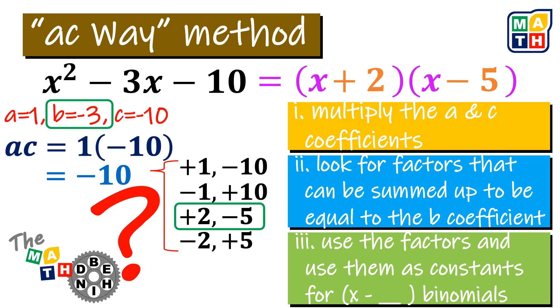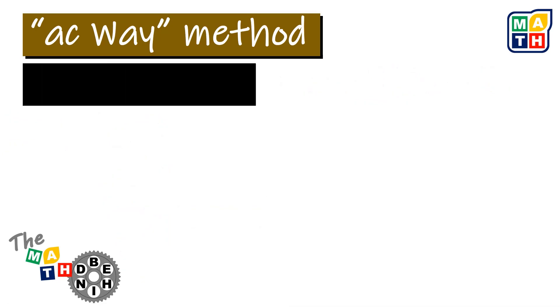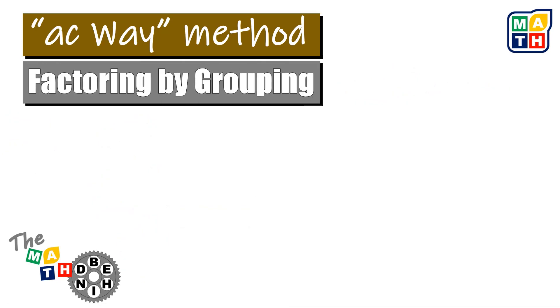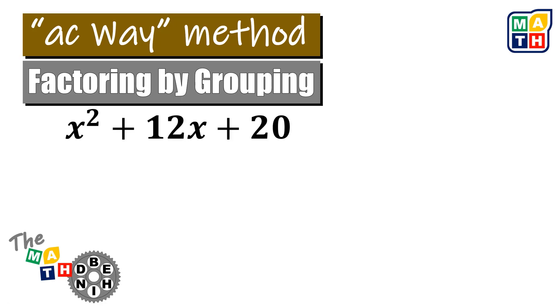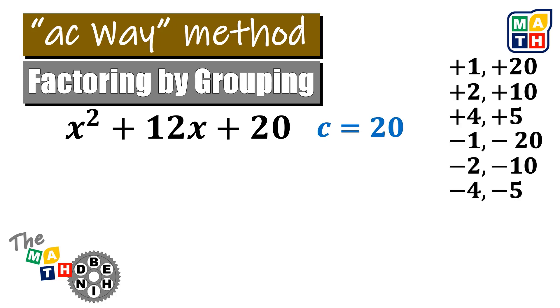The math behind this method is actually factoring by grouping. Let us use the first quadratic expression given earlier: x squared plus 12x plus 20. Here, we need to show that by factoring by grouping we arrive at the same results as with the shorter AC-Way method. The first part of factoring by grouping uses the same concept, but just uses the C coefficient — we get the factors of C.